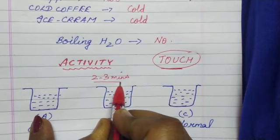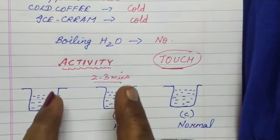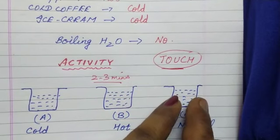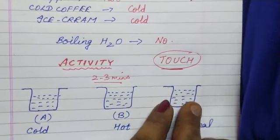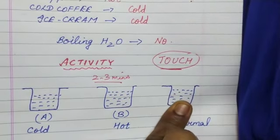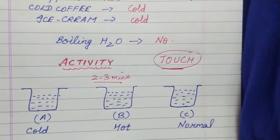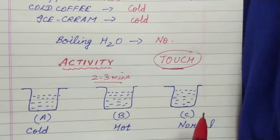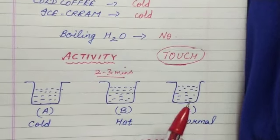Now, after two to three minutes what do you have to do? You have to take out both your hands simultaneously and you have to put both your hands together in container C which is having normal water. Now can you tell me what will be your feeling? You please try it at home. But for the time being I will tell you what will be your feeling.